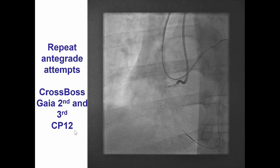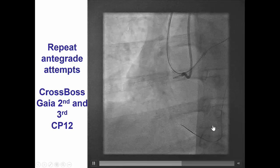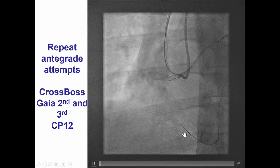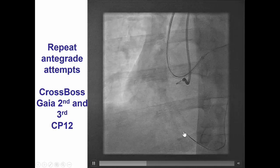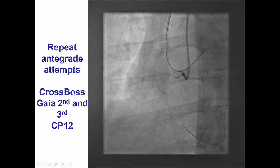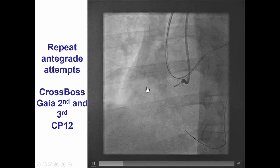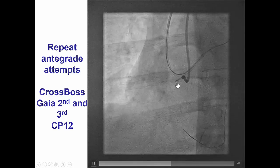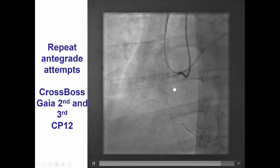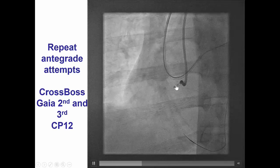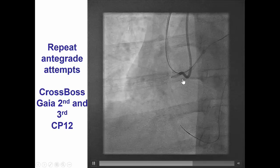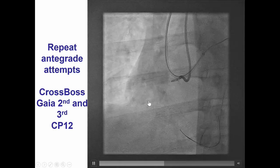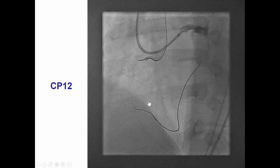We then tried antegrade again given the lack of progress with the retrograde approach. We tried with the CrossBoss catheter, Gaia 1st, 2nd and 3rd, as well as a Confianza Pro 12, but we could not cross antegrade either.